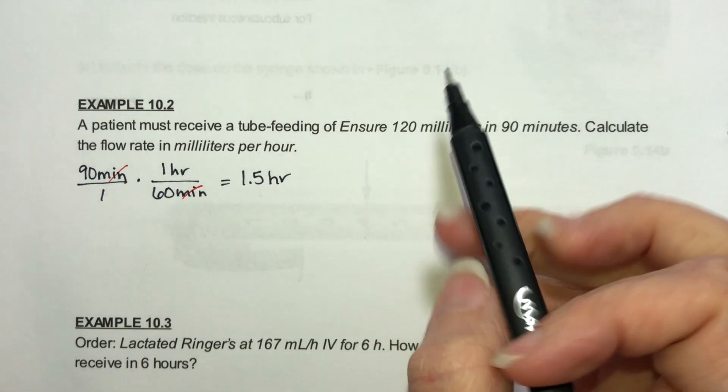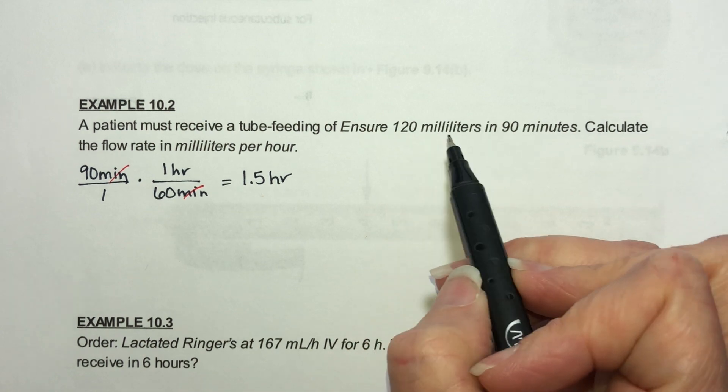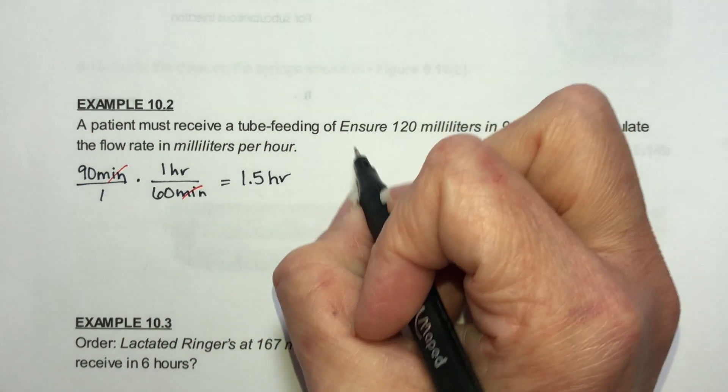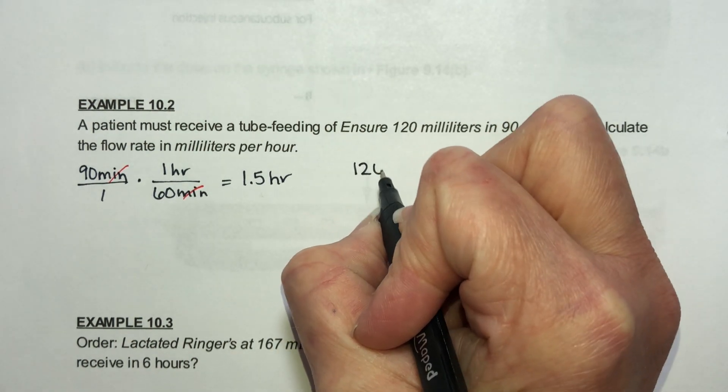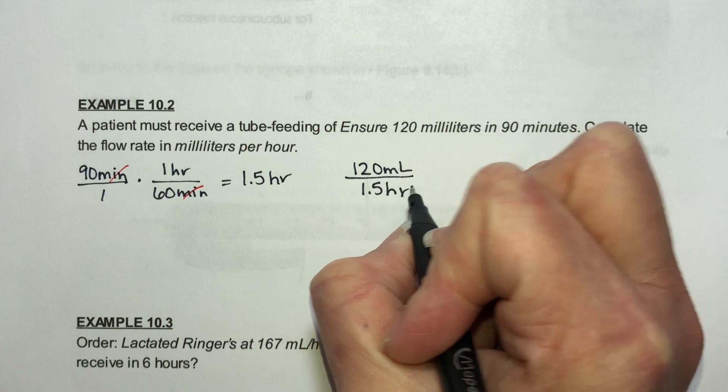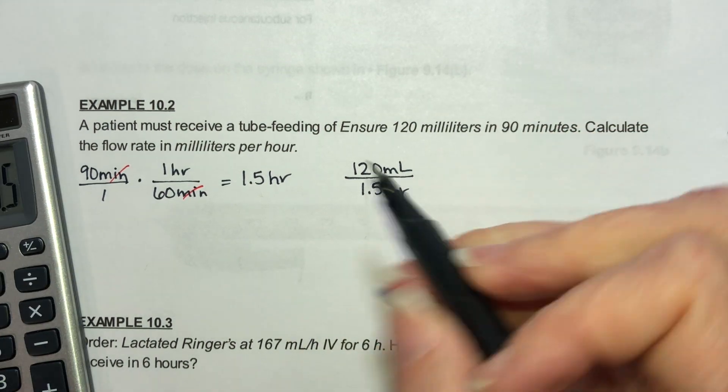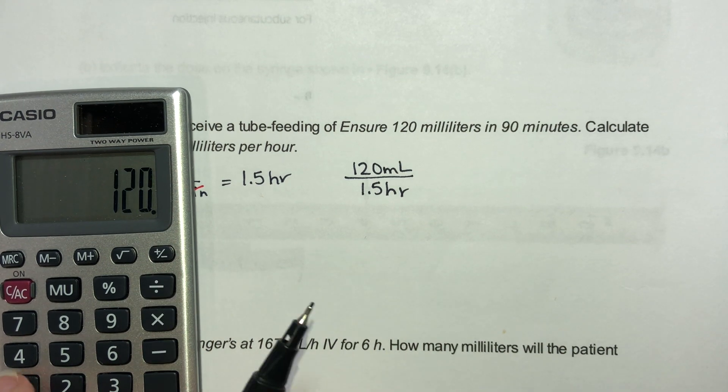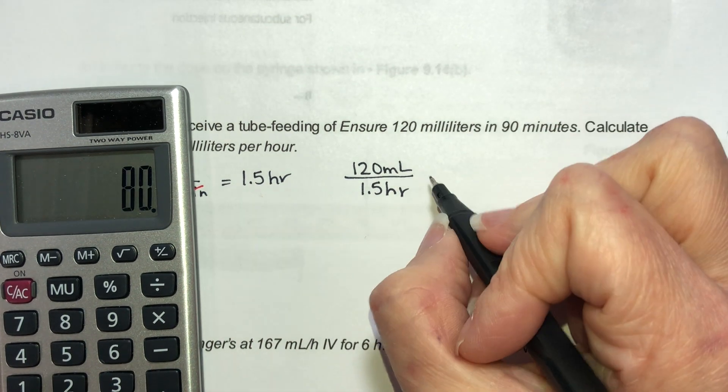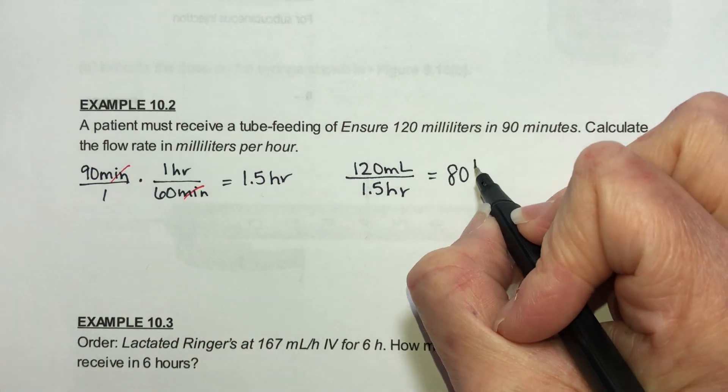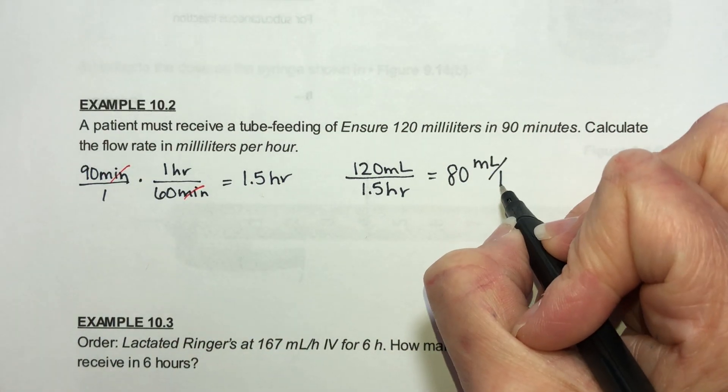We're supposed to give 120 milliliters in 1.5 hours so the flow rate is volume which is 120 milliliters over time which is 1.5 hours. We don't want to leave this with the decimal in the bottom so do 120 divided by 1.5 and you get 80. So the flow rate will be 80 milliliters per hour.